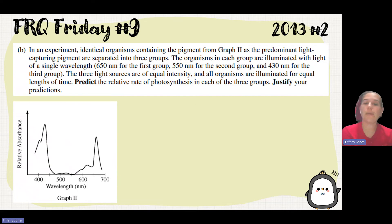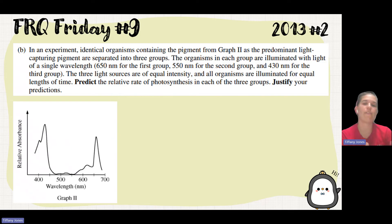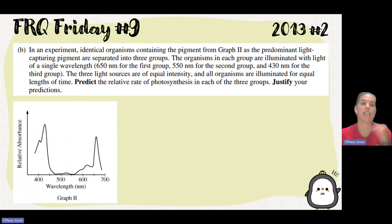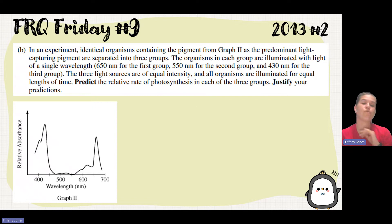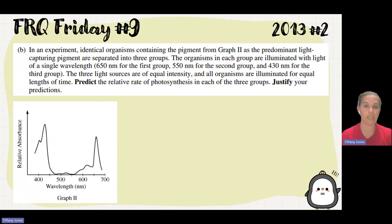In the experiment, they give you identical organisms that all have graph two, so you're focusing on graph two. They want you to predict the relative rate of photosynthesis when three different wavelengths are used: 650, 550, and 430 nanometers, and then justify those predictions.